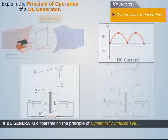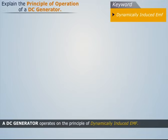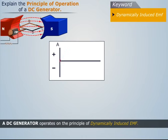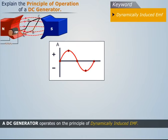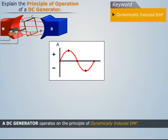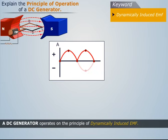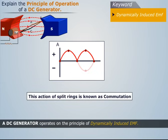Thus we see that similar to an AC generator, the current induced in the coils of a DC generator is also alternating, but due to the rectifying action of the split rings, the current across the external load becomes unidirectional. This action of split rings is known as commutation.